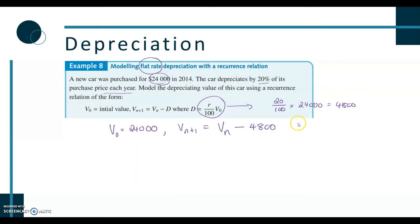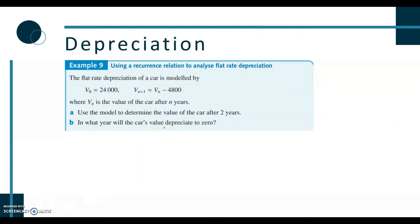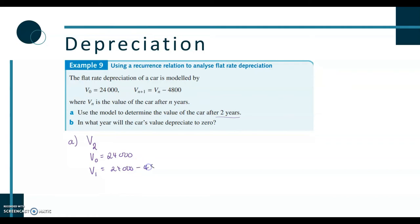The recurrence relation is Vn+1 = Vn − 4800. Part a: use the model to determine the value after two years. To find V2 we need V1 first: V0 = 24,000, V1 = 24,000 − 4,800 = 19,200, V2 = 19,200 − 4,800 = $14,400.